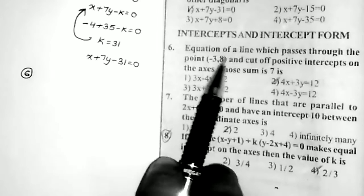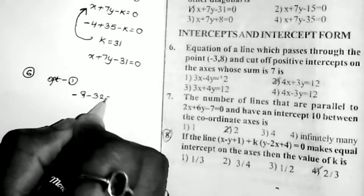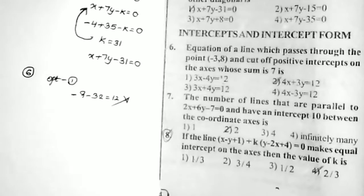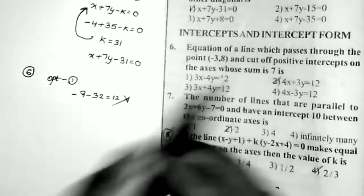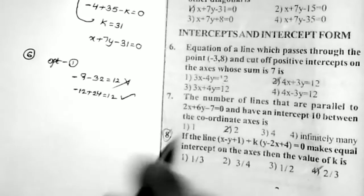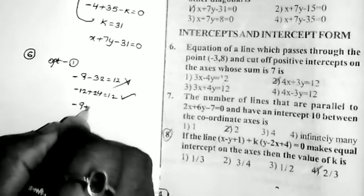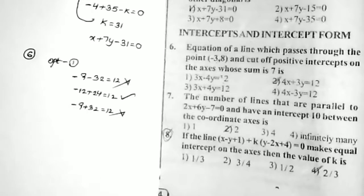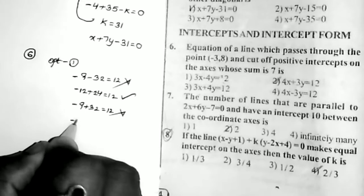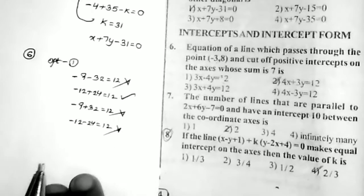Using options verification: Option 1 is 3x − 4y = 12. Substituting (−3, 8): −9 − 32 = 12, which is not correct. Option 2: substituting (−3, 8) gives −12 + 24 = 12. Yes, this is correct. Option 3: −9 + 32 ≠ 12, not correct. Option 4: −12 − 24 ≠ 12, not correct. So the answer is only option 2.